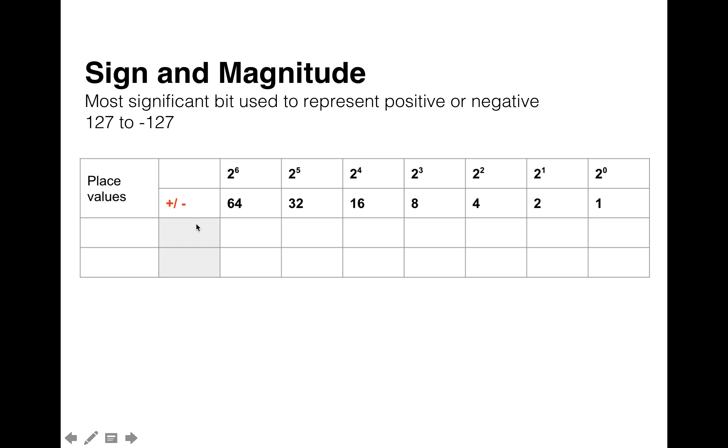In this case, that would be 128, the largest number, to represent whether it's positive or negative. Zero is positive and one is negative. The limitation of sign and magnitude is that once we take away the eighth bit, we're limiting the values we can represent to 127 to -127. This reduces the size of the numbers, but the range if you added those two together is still pretty much the same.